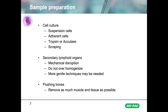Some cells, such as primary macrophages and dendritic cells, are often better harvested by scraping to try to be as gentle as possible. However, whatever method you choose, there will always be a loss of cells and dead cells present.